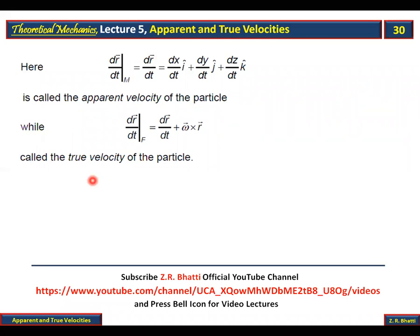The difference is: if the observer is in the rotating coordinate system, the velocity observed will be the apparent velocity. If the observer is in the fixed coordinate system, then the velocity observed will be the true velocity.